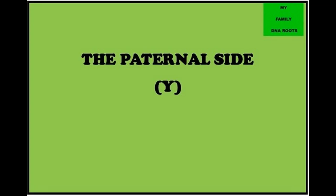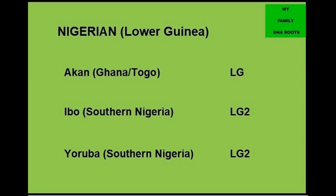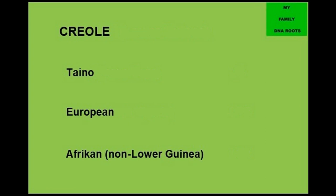On my father's side of the family, the ancestral stream is a lot more of a typical makeup for a Jamaican family, in terms of possessing a majority Lower Guinea, Southern Nigeria heritage in the Ibo tradition - the favored choice of slave for the British plantocracy of Jamaica - with additional Creole-like elements tending to be a varying mix of non-Lower Guinea people, whether Taino, European or African.